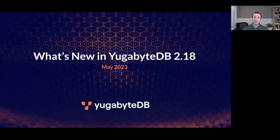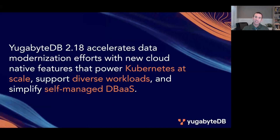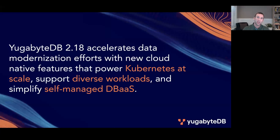Welcome, everyone. I'm Michael He, and thanks for joining me for What's New in YugabyteDB 2.18, which is our newest stable release packed with features ready for production environments today. Our mission remains the same: deliver the best distributed database for cloud-native transactional applications. The updates in this release are designed to help you accelerate your monetization efforts by powering multi-region Kubernetes at scale, supporting a diverse set of workloads, and simplifying operations by enhancing our self-managed DBaaS offering, YugabyteDB Anywhere.